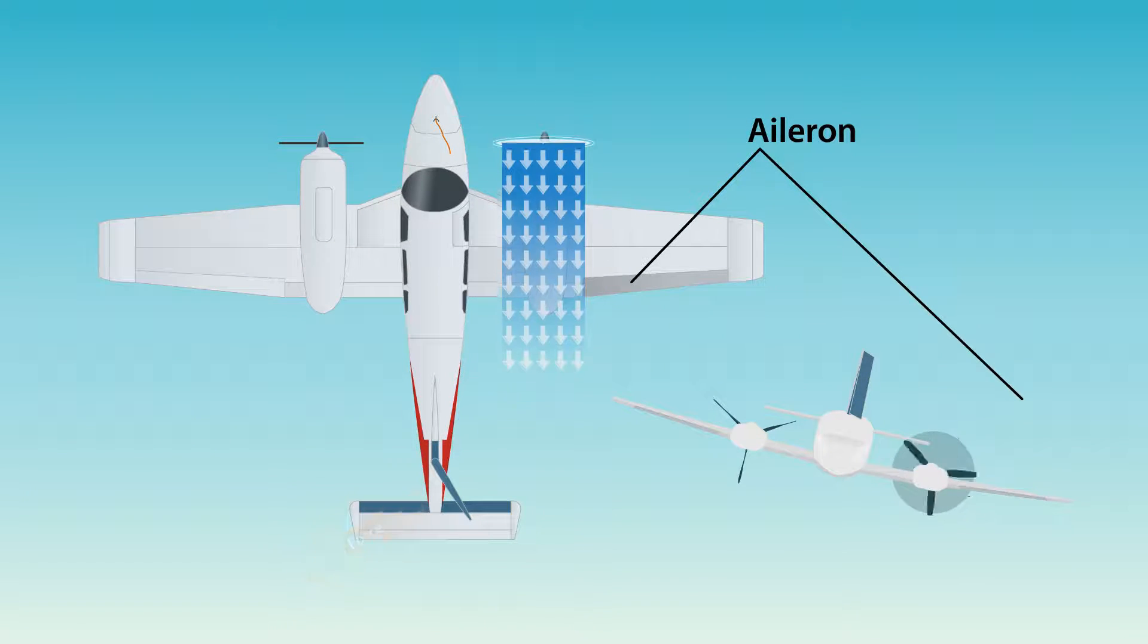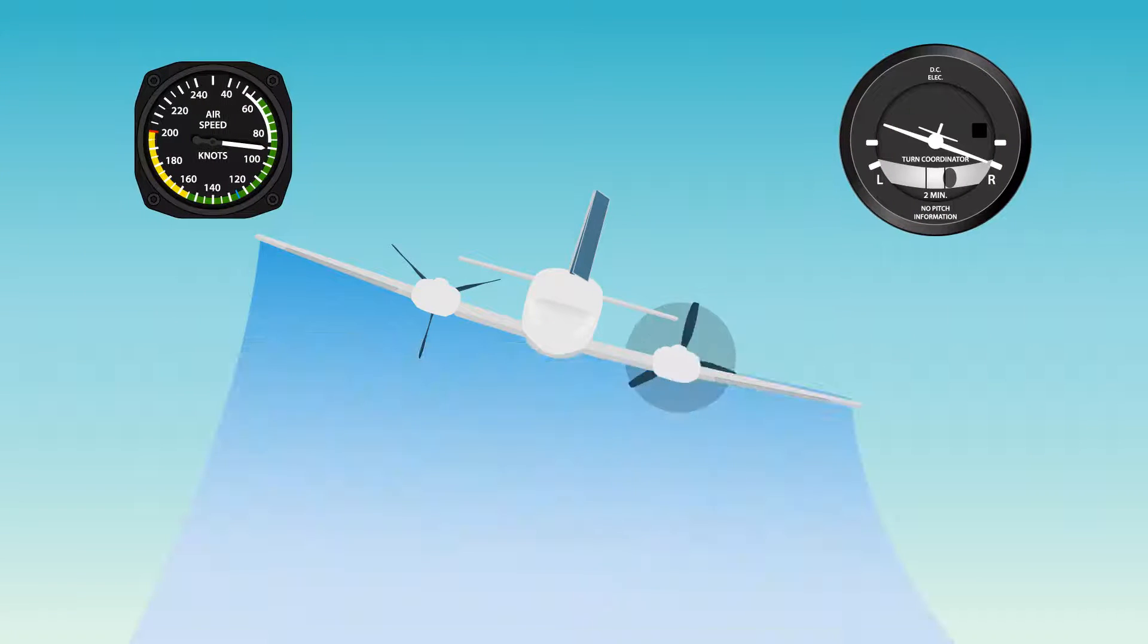During one engine inoperative flight, a combination of aileron and rudder helps establish zero sideslip. Adequate altitude, flying speed, and caution should be maintained if attempting these maneuvers.